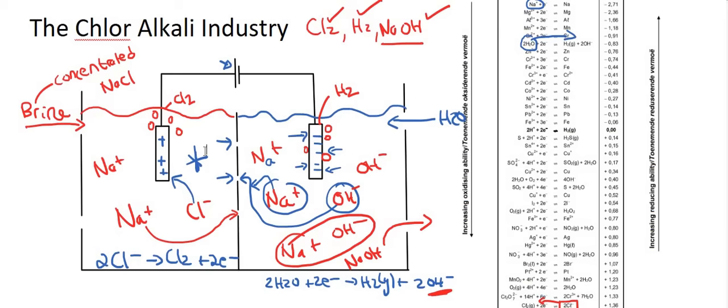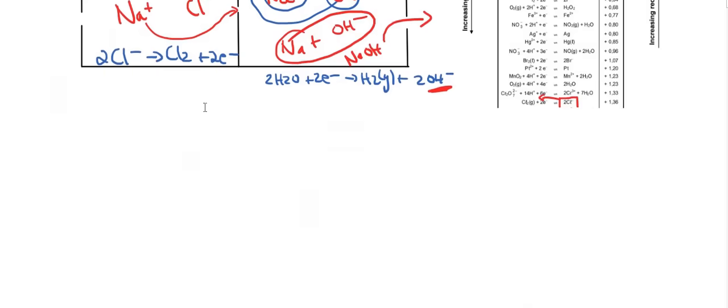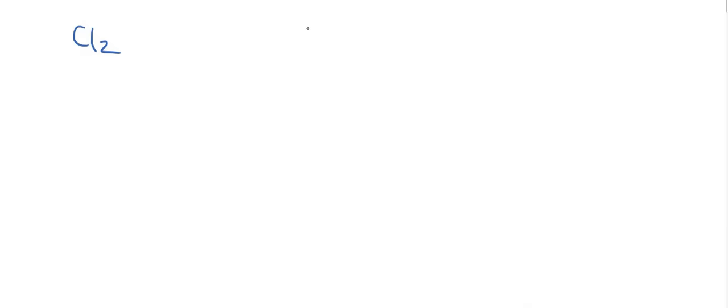Now, why do we need the chloralkali industry? It is to produce Cl2, hydrogen gas, and NaOH. I'm going to give you guys two uses for each one. And you can just write these down and then use them in your exams. So, chlorine, we use it to purify water as it kills bacteria. You know, if you have a swimming pool, you throw in some hydrochloric acid, which helps keeps your pool clean. They also use it for PVC piping.